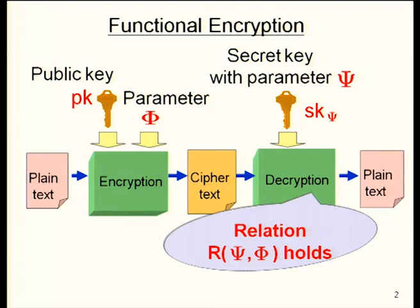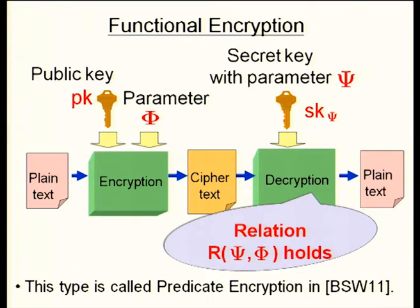In other words, this relation controls the decryption mechanism, combining an access structure defined by R and encryption-decryption functionality. In a recent paper by Boneh-Sahai-Waters, this type of functional encryption is called predicate encryption, and functional encryption is defined as a more general notion of an encryption scheme.